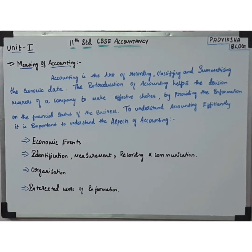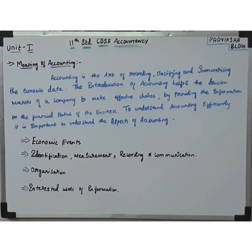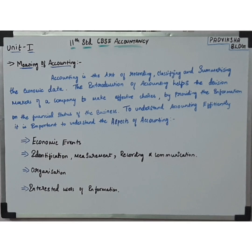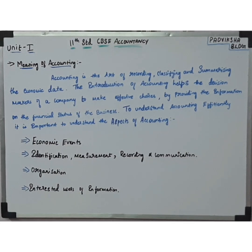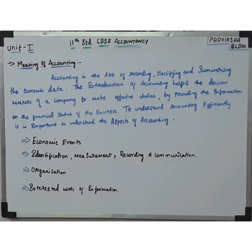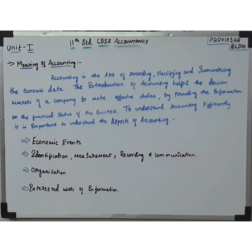The second aspect is identification, measurement, and recording and communication. The accounting system should be outlined in such a way that the right data is identified, measured, recorded, and communicated to the right individual at the right time. So this is nothing but right data given to the right people at the right time.